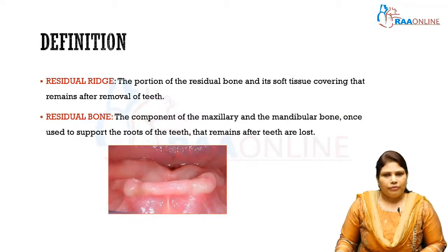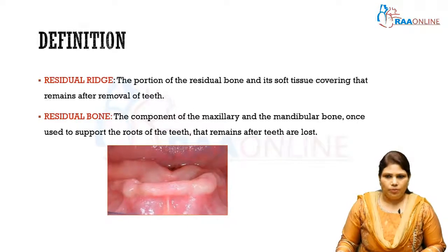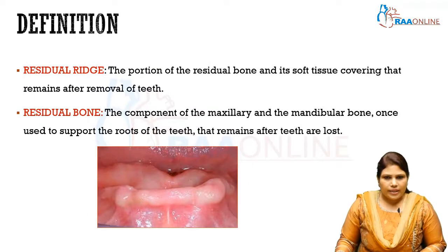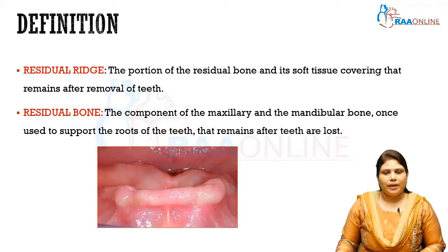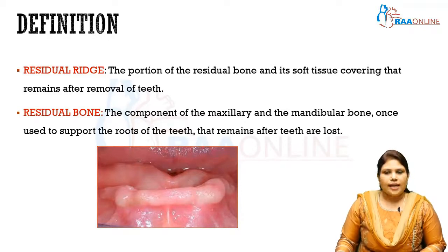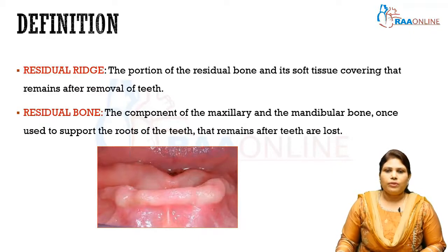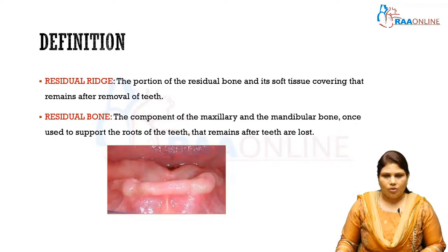Other important definitions are the residual ridge and the residual bone. The residual ridge is the portion of the residual bone and its soft tissue covering which remains after the removal of the teeth. The residual bone is that component of the maxillary and mandibular bone which is used to support the roots of the teeth, or that which remains after the teeth are lost.